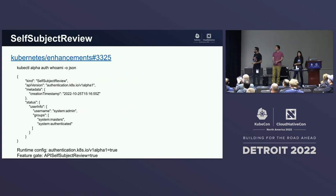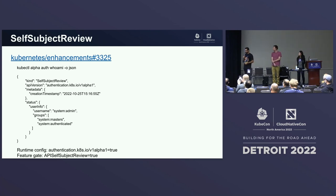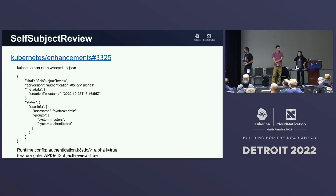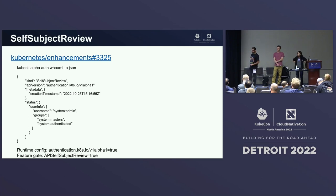As a member of SIG auth, at some point I got exhausted by not knowing who I was on the Kubernetes cluster, so we added an API for that. It's alpha in 1.26. I expect basically no changes to this API because there's essentially no inputs, so hope to see that one go stable soon.